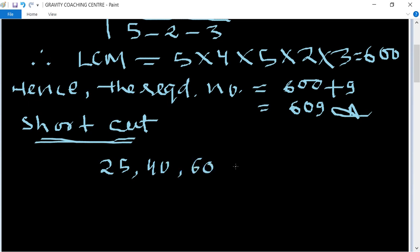In these three, first select the greatest number, which is 60. Check if 60 is divisible by the other numbers. 60 is not divisible by 25, but if we multiply by 5, we get 300.